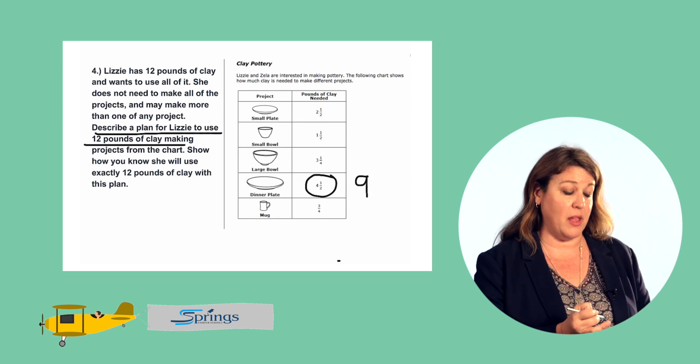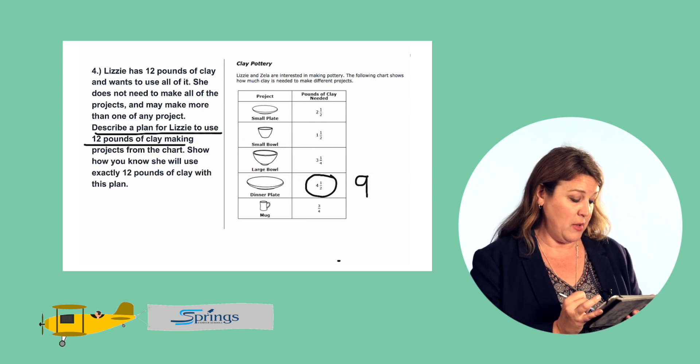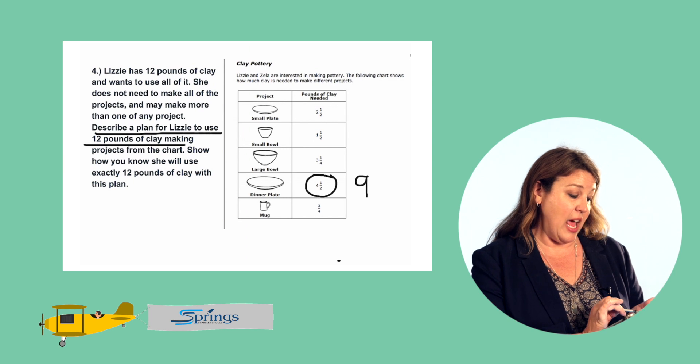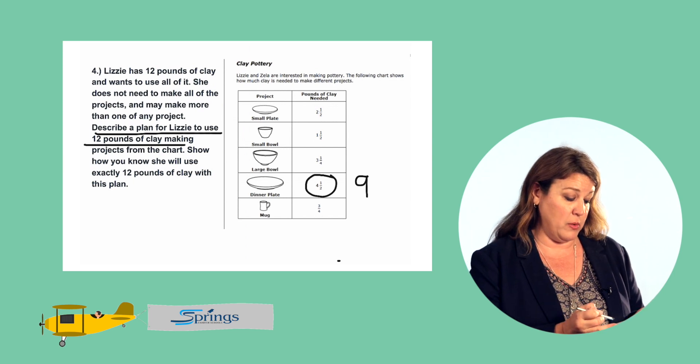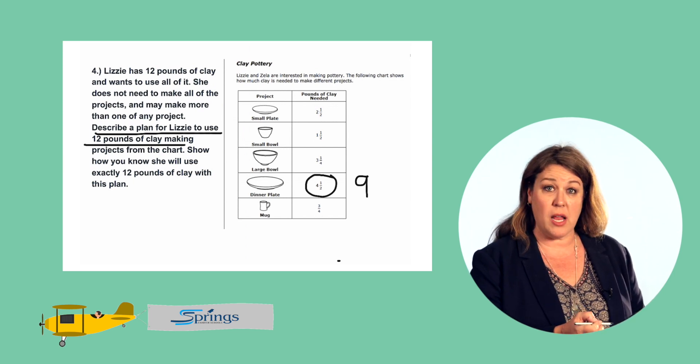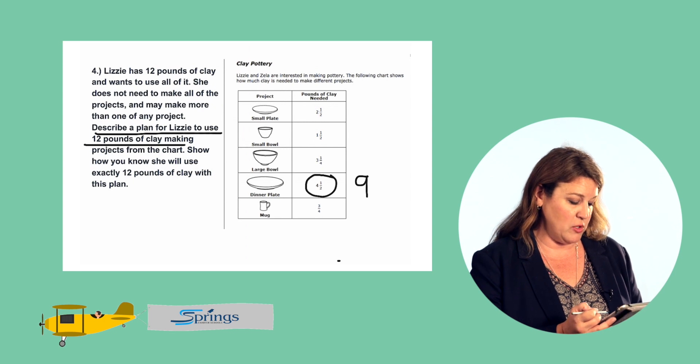It would take nine pounds of clay to make two dinner plates. She needs to use exactly 12 pounds of clay. So she's already used nine to make two dinner plates. So she only needs to use three more.